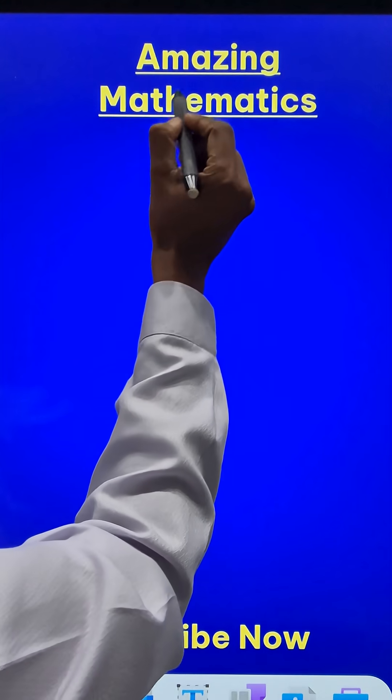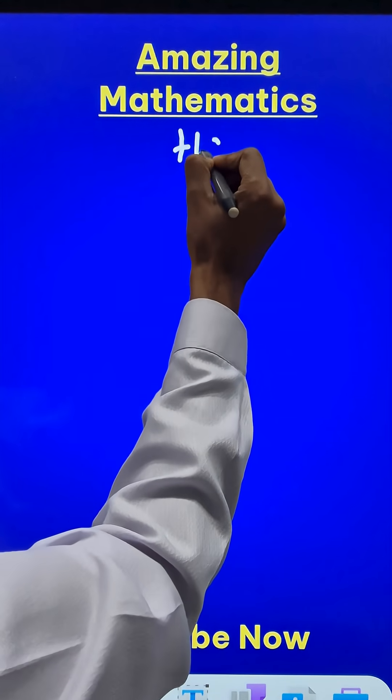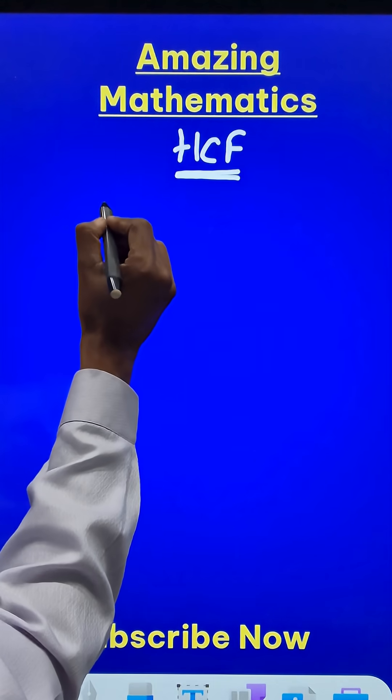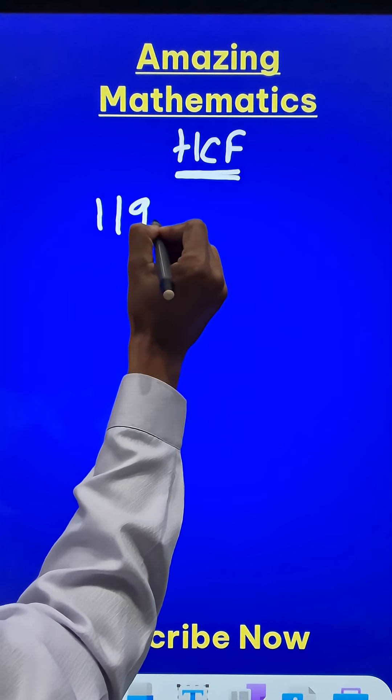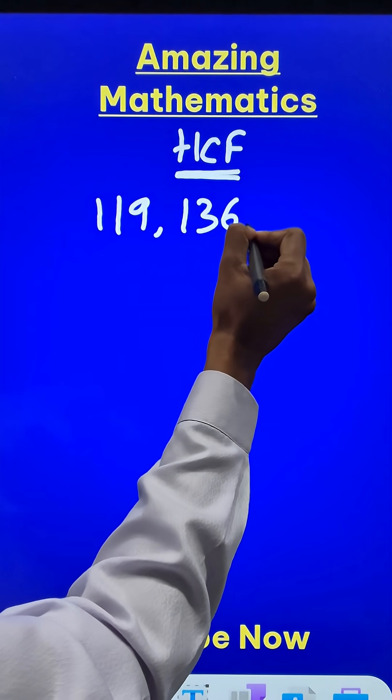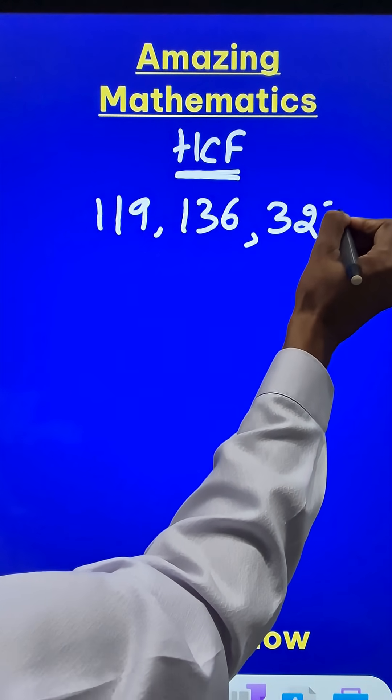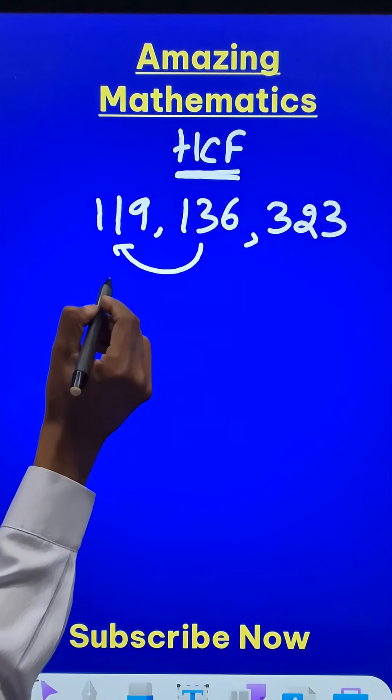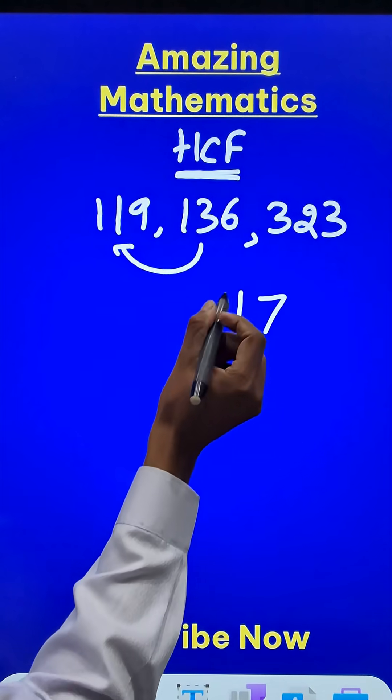Here is an amazing mathematics trick to find the highest common factor of three digit numbers: 119, 136, and 323. The difference between these two numbers is 17. The difference between these two is much more than 17.